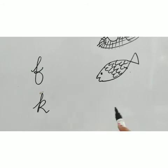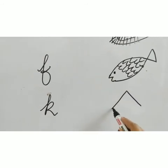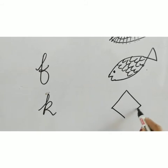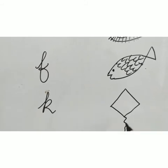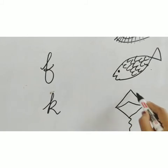Next, K, K for kite, for making kite, make a slanting line, again a slanting line, then slanting line and slanting line. And a tail like this, this is kite.